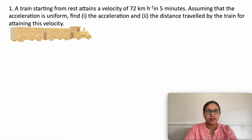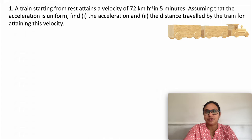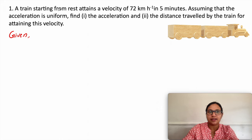Let us start. First question: a train starting from rest attains a velocity of 72 kilometer per hour in five minutes. Assuming that the acceleration is uniform, find one: acceleration, and second: the distance traveled by the train for attaining this velocity. First, we need to know what parameters are given.